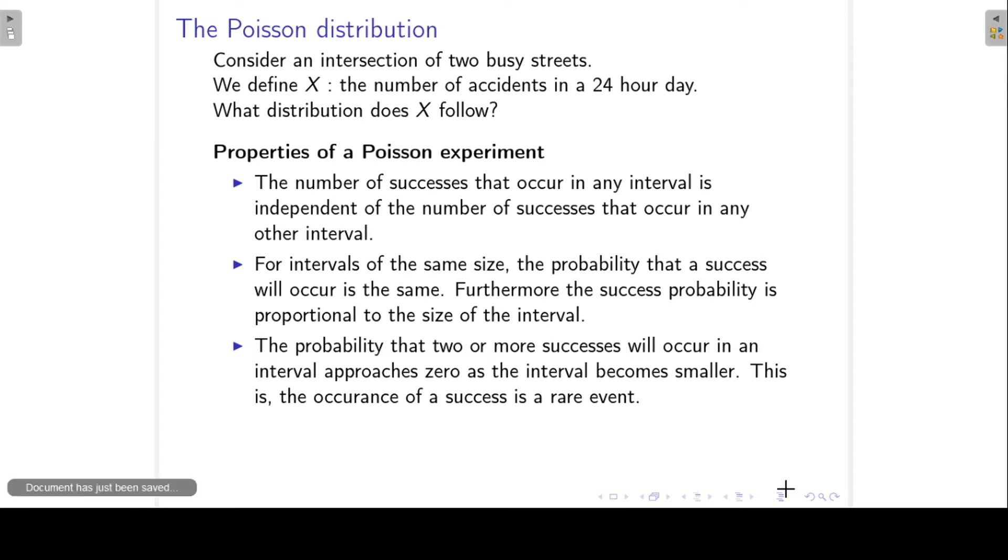Lastly, the probability that two or more successes will occur in an interval approaches zero as the interval becomes smaller. This just means that the occurrence of a success is a rare event. It's not something that happens all the time. So hopefully, the occurrence of an accident is also a rare event. We don't expect it to happen every few minutes.